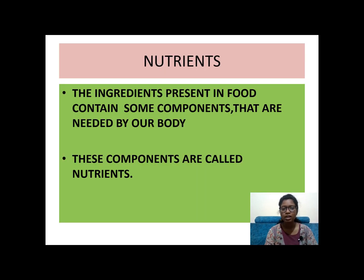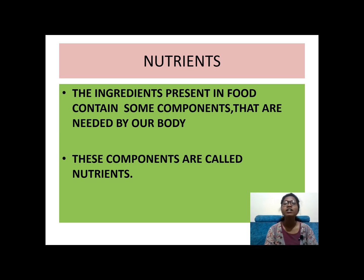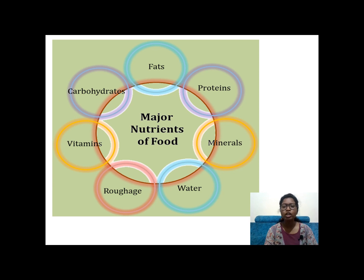What are nutrients? The ingredients present in food items are actually needed by our body. These components which are needed by our body are called nutrients. The major nutrients of the body are: carbohydrates, fats, proteins, minerals, water, roughage, and vitamins. You should have this flow chart drawn in your notebook.